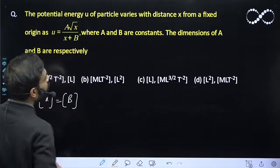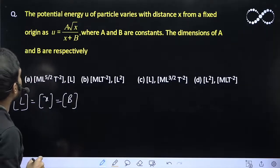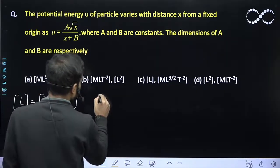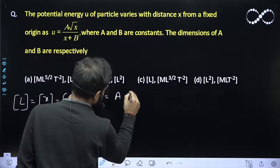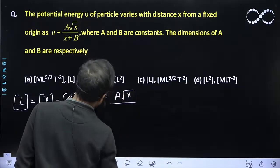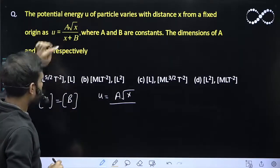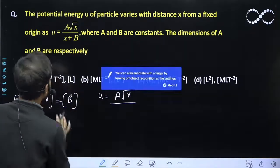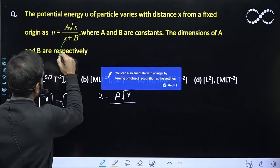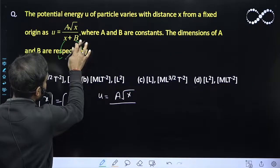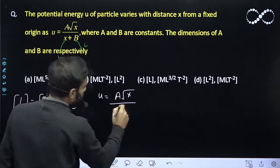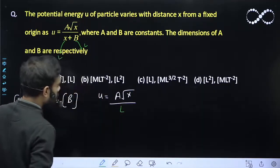Now I need to find the dimension of A also. Let us see here. U equals A root x divided by x plus B. The dimension of x is L, so the dimension of B will also be L, and the sum will also have the same dimension equal to L.